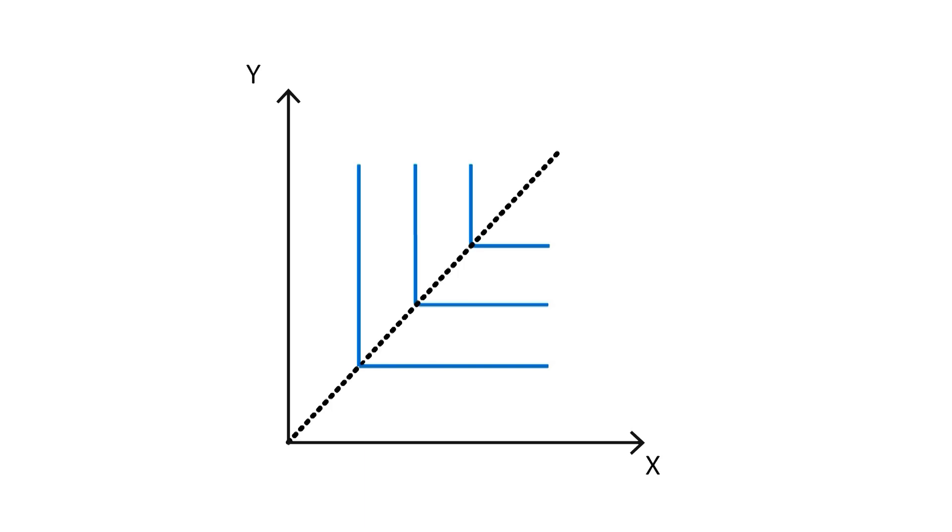Notice that the elbows are collinear, and the line crossing them defines the proportion in which each good needs to increase in order to have an increase in the utility. In this case, the horizontal fragment of each indifference curve has a marginal rate of substitution equal to 0, and the vertical fractions a marginal rate of substitution equal to infinite.